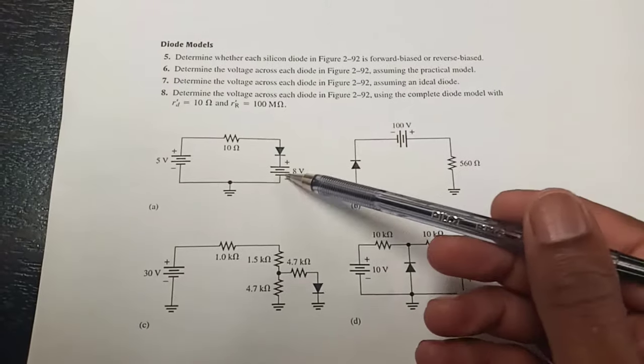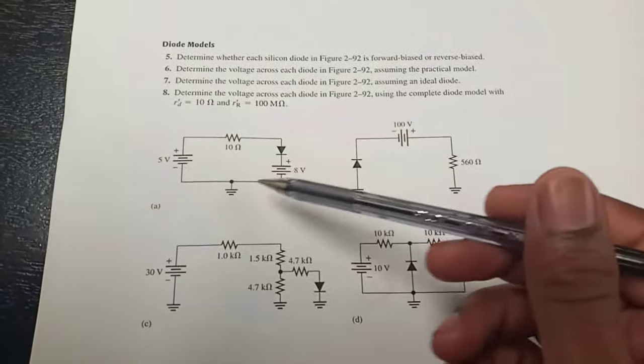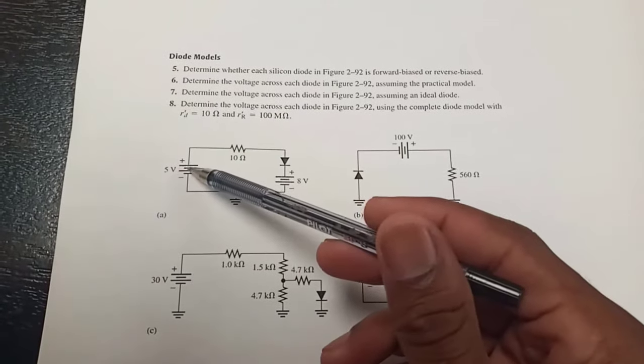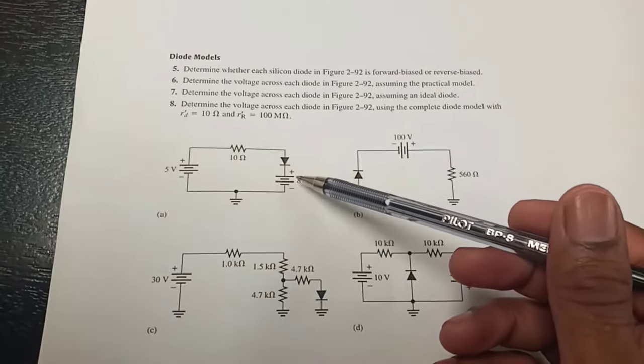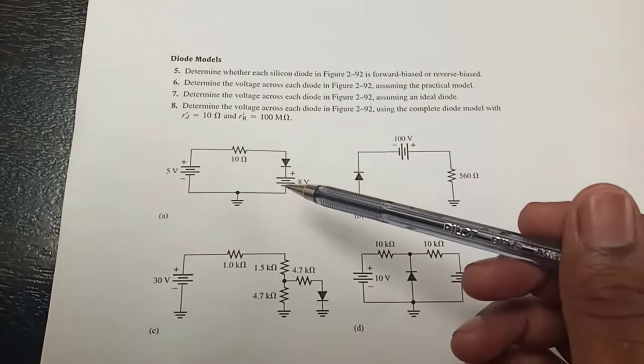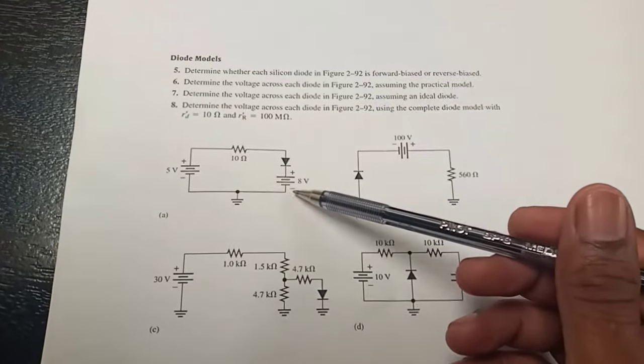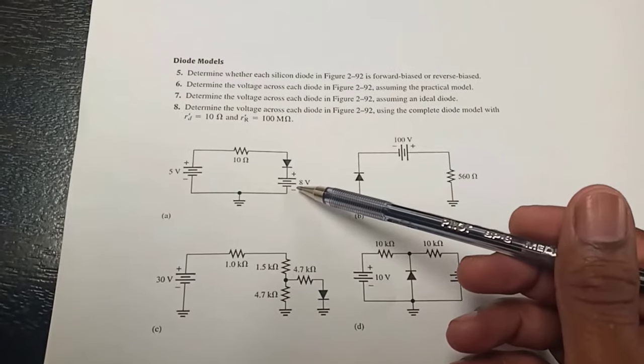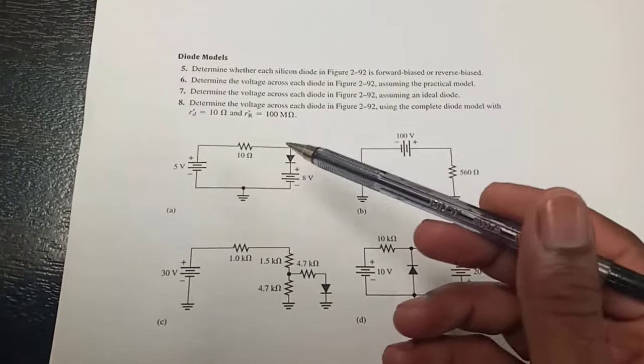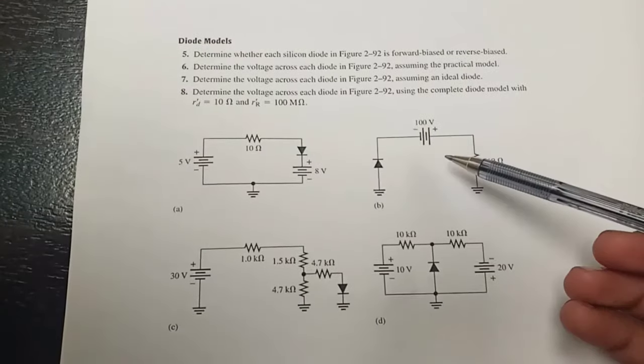If you check here, we've got two supply voltages. Now if you run your loops here, you'll see that the plus 5 volts here and the plus 8 volts, they're going to subtract. So you'll end up having the forward voltage being negative—that will be minus 3 volts if you run the loop. So that means this diode will not be forward biased.